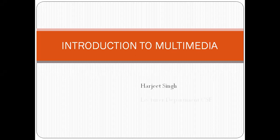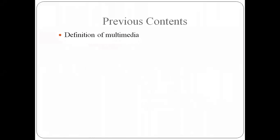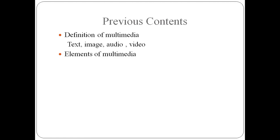Before starting today's lecture, we are going to revise our previous contents. We have done the definition of multimedia: the combination of text, image, audio and video which we use to deliver our information in a more effective way. Next, we covered elements of multimedia — there are basically 5 or 6 types: text, image, graphic, audio, video and animation.